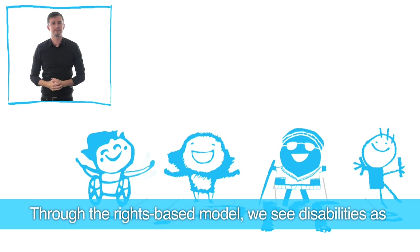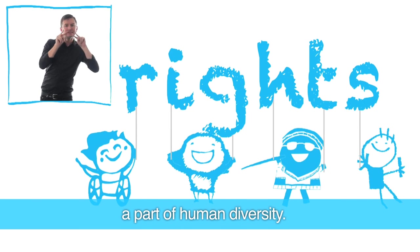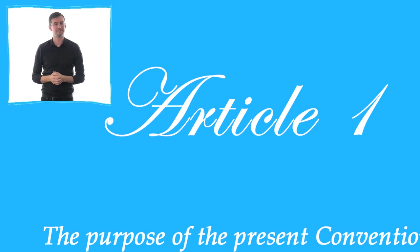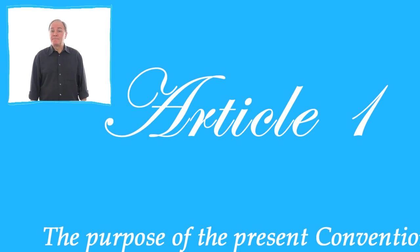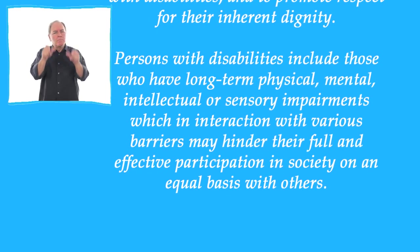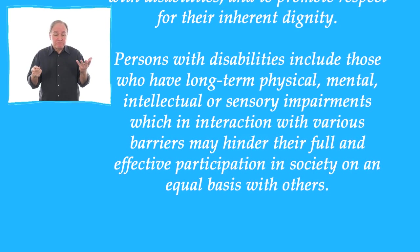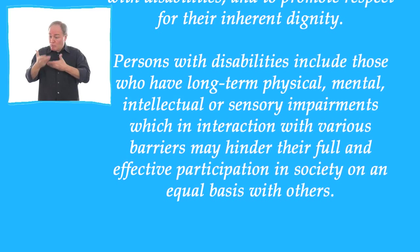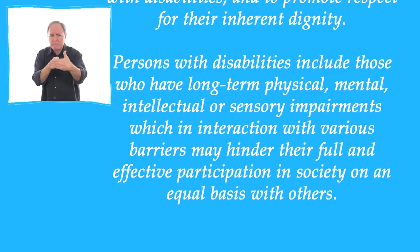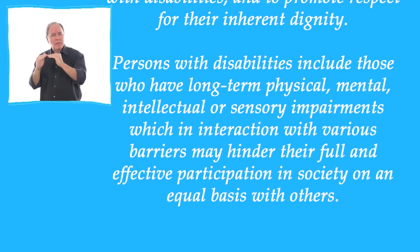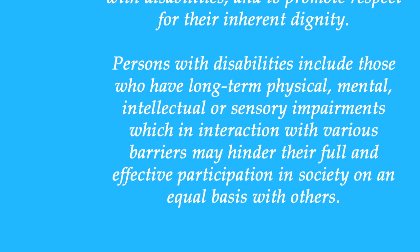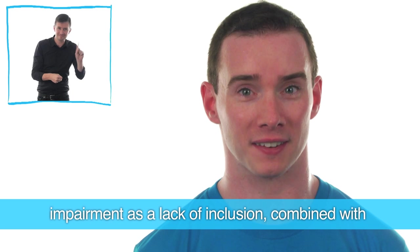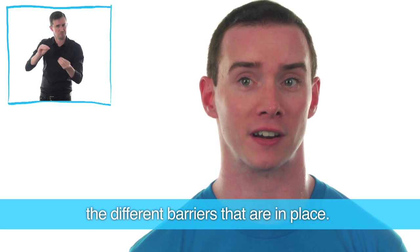Through the rights-based model, we see disabilities as a part of human diversity. The Convention on the Rights of Persons with Disabilities, Article 1: Persons with disabilities include those who have long-term physical, mental, intellectual or sensory impairments, which, in interaction with various barriers, may hinder their full and effective participation in society on an equal basis with others. So disabilities aren't so much about a person's impairment as a lack of inclusion, combined with the different barriers that are in place.